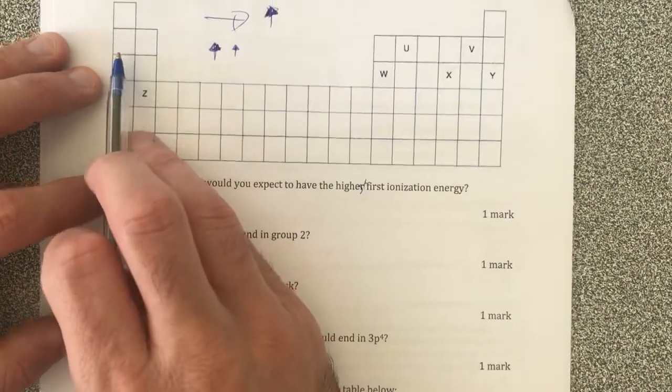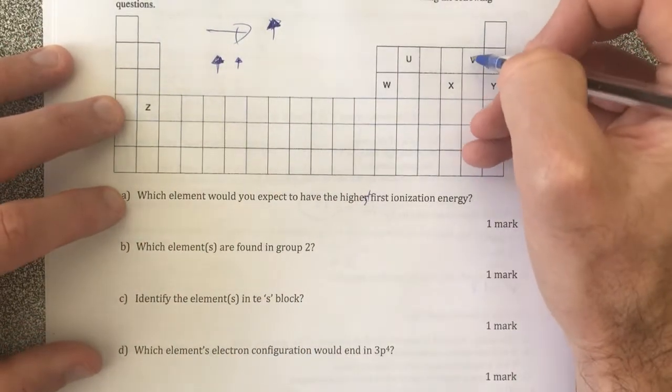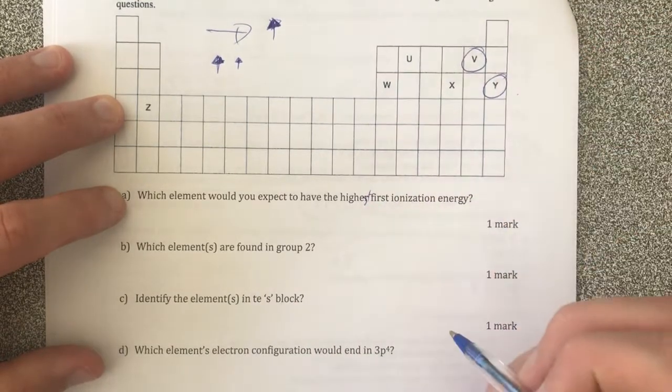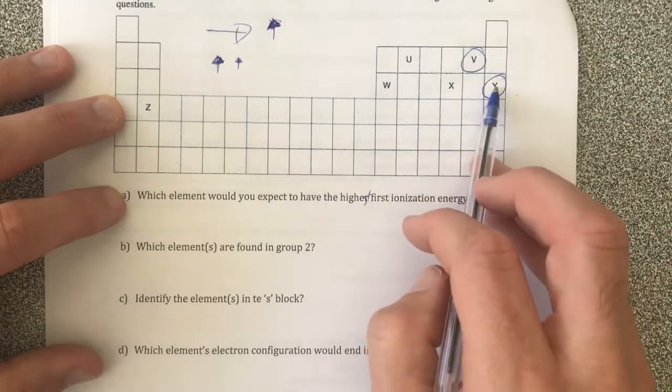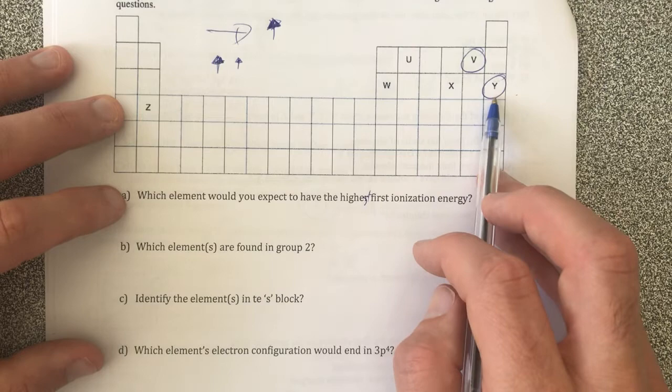So it should be the one that's furthest across and furthest up, which would suggest that it's gonna be V, or I could probably also put Y in there as well because being a noble gas, it's gonna be very hard to ionize that because it's very stable.